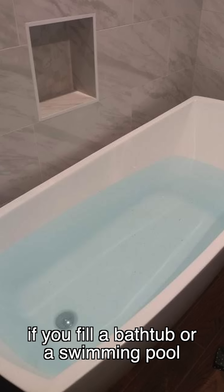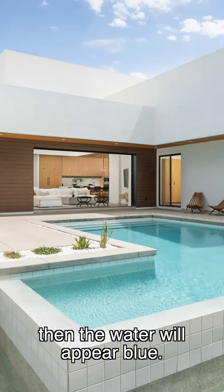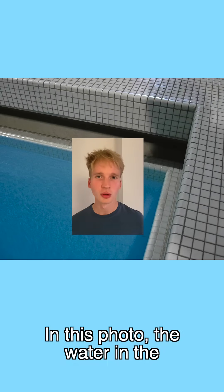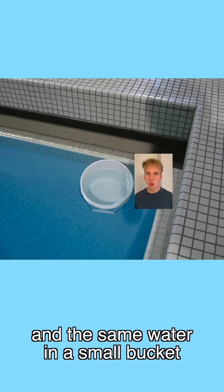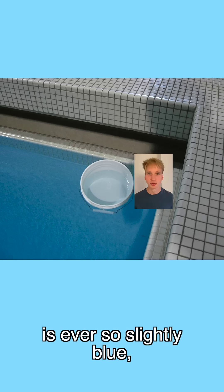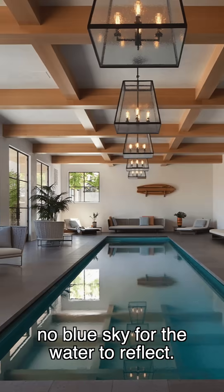For example, if you fill a bathtub or a swimming pool that has white sides and floor, then the water will appear blue. In this photo, the water in the deep pool is blue, and the same water in a small bucket is ever so slightly blue, even if the pool is indoors and there's no blue sky for the water to reflect.